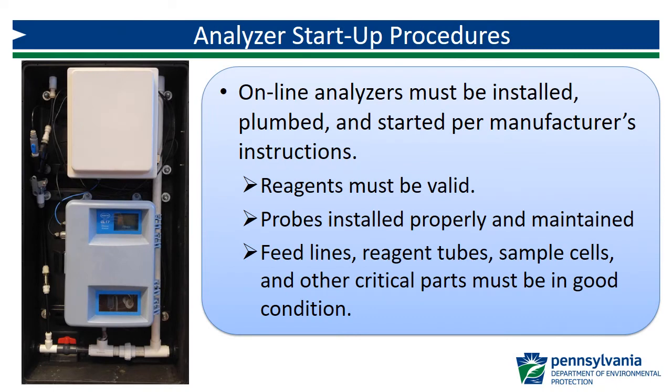Online analyzers must be installed and plumbed according to manufacturer instructions. Pressures and flows must be within specifications, and all required components must be present. Routine maintenance is critical. Reagents for colorimetric analyzers must be appropriate, valid, and installed correctly. Probes for amperimetric units must be installed properly and maintained according to manufacturer recommendations. Critical components such as feed lines, reagent tubes, and sample cells must be in good operating condition.